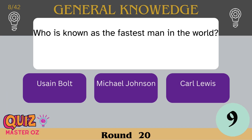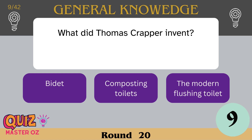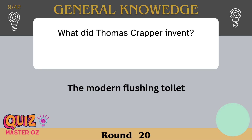Who is known as the fastest man in the world? Usain Bolt. What did Thomas Crapper invent? The modern flushing toilet.